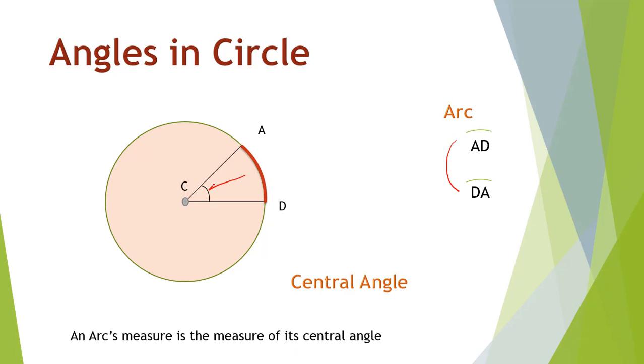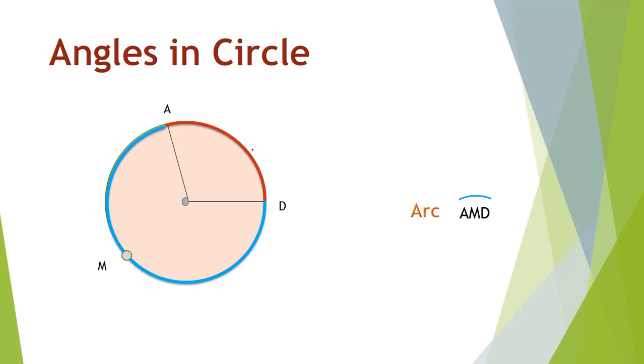So, the measure of this arc over here is 45 degrees. The smaller arc on a circle is called minor arc and the bigger arc, that one in blue, is a major arc.